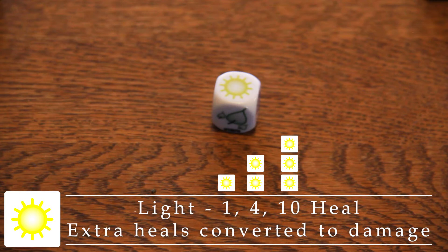Additionally, when rolling light, any healing value generated that would heal you past the maximum 10 health is converted to damage on your opponent. This includes healing from other dice. You must heal to 10 first, then convert the extra.